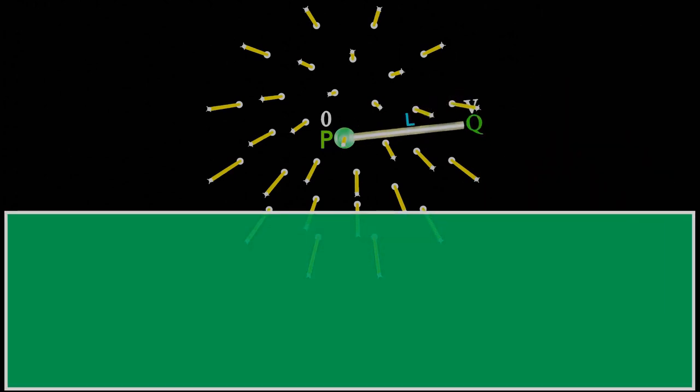So, now we can find the average velocity of a rotating rod by adding velocity at point P and Q, and dividing it by 2. So, we get average velocity is equal to V/2.